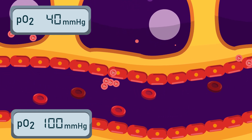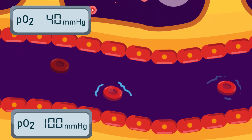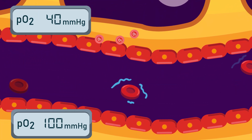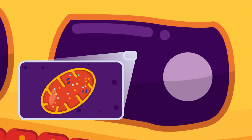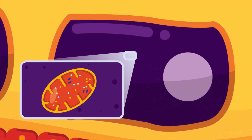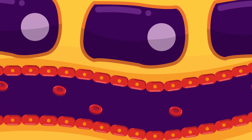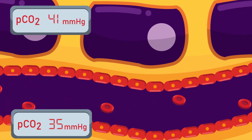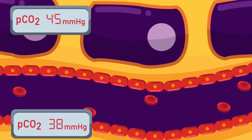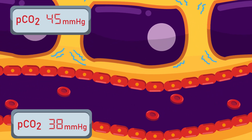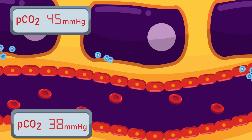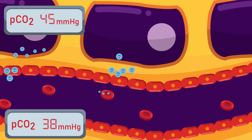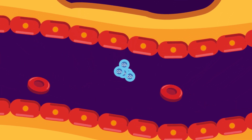Hemoglobin that loses oxygen bonded to it becomes darkened and changes color into burgundy. Because cellular respiration continuously produces carbon dioxide, the partial pressure of carbon dioxide is higher in the tissue than in blood, forcing carbon dioxide to diffuse out of the tissue, go across the interstitial fluid, and go inside the blood.